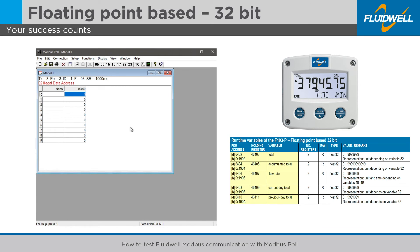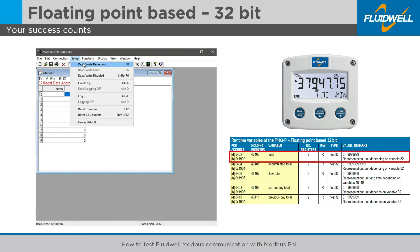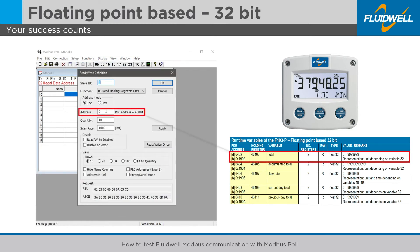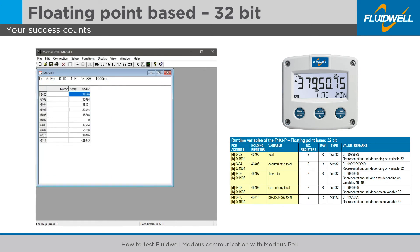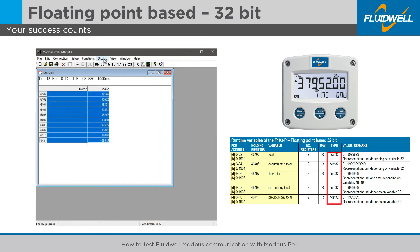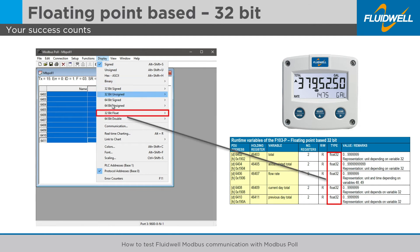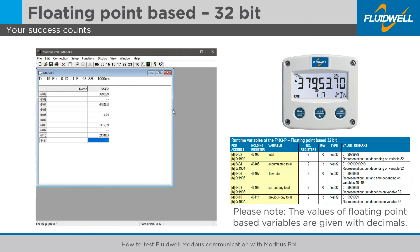For a floating point based 32-bit read of the total accumulated total, flow rate and daily totals, select the corresponding table in the manual. The table shows the first PDU address of 6402 and the total number of registers of all variables is 10. Apply the 32-bit float data type with Big Endian register order for a correct reading. Please note, the values of floating point based variables are given with decimals.